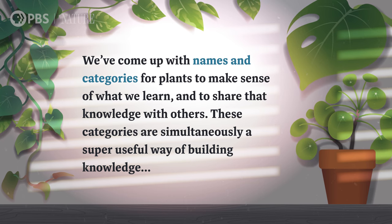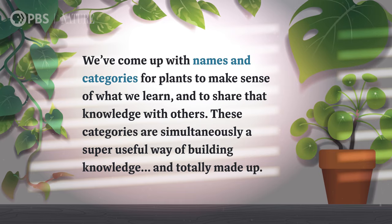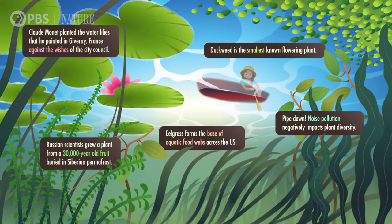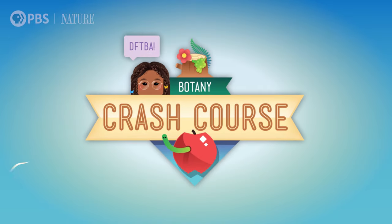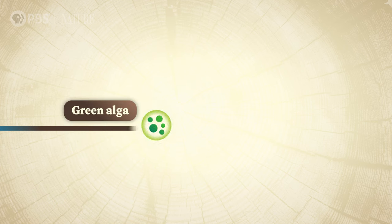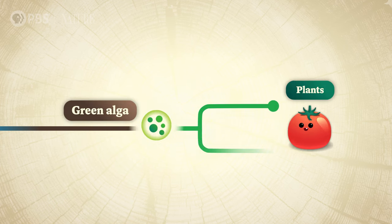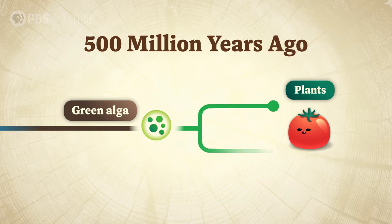These categories are simultaneously a super useful way of building knowledge and totally made up. Hi, I'm Alexis and this is Crash Course Botany. There are hundreds of thousands of different types of plants. So what makes something a plant? All the plants we know today descended from the same ancestor — a teeny tiny green alga (that's the singular for algae) that existed around 500 million years ago.